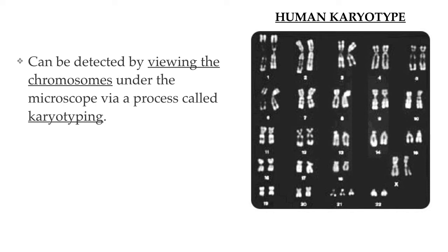For example, in this karyotype, we can tell that there is an issue with chromosome number 21 — there are three of them. This is a disorder known as Down syndrome. This karyotype also tells us that this person is female, because she has two X chromosomes instead of an X and a Y chromosome.